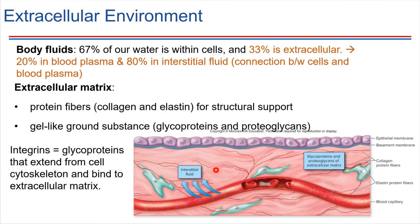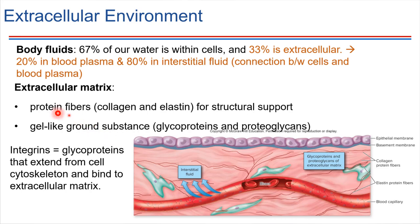If this interstitial space did not have protein fibers — if it didn't have any sort of support structure — that would mean this is a very weak area. That would mean anytime you brushed up against something, your skin would totally slide in one direction. So there's a lot of support structure in here. We've got protein fibers; we talked about collagen earlier in the class when we were reviewing connective tissue. And then there's also a lot of gel-like material — gel-like ground substance.